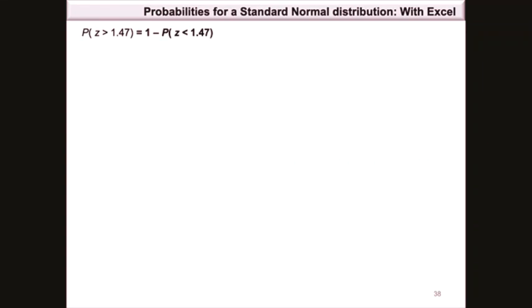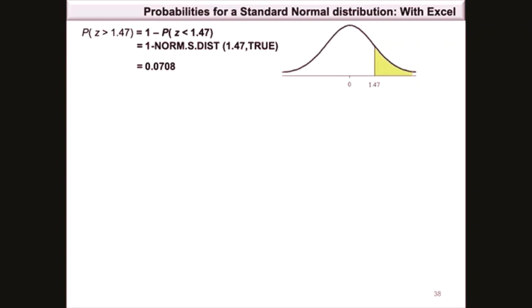The probability that z is greater than 1.47 equals 1 minus the probability that z is less than 1.47, since Excel and normal probability distributions give probabilities to the left of a value. The shaded area on the graph is to the right of 1.47. The Excel formula is =1 − norm.s.dist(1.47, TRUE), which gives 0.0708.